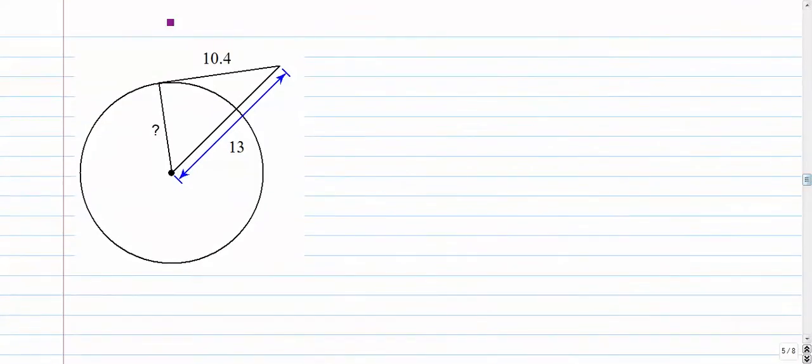Let's go on to number 4. Number 4 is a little different problem. Now we're assuming the problem's going to tell us that this is a tangent line. So we know that that's a right angle. And our question is very simple: find the radius. We're just going to say a² + b² = c². We'll say a is the radius, b is 10.4, equals 13².